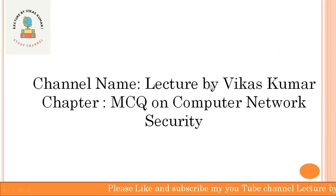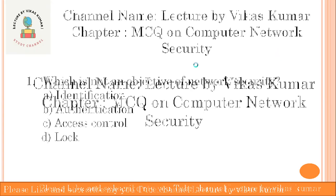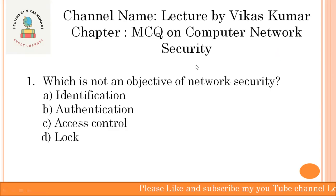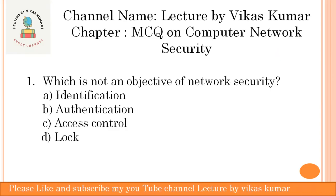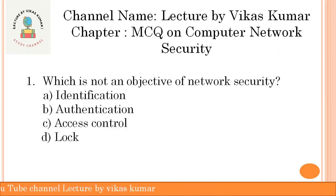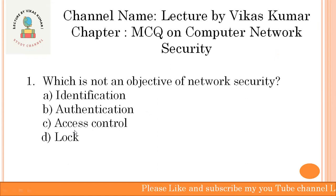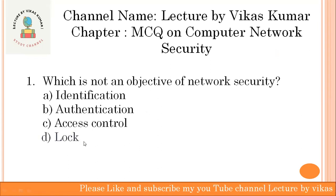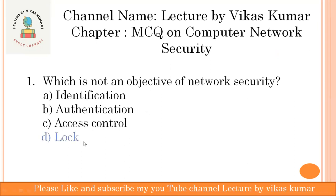The first question: which is not an objective of network security? The options are identification, authentication, access control, and lock. Lock — option D — is the correct answer.